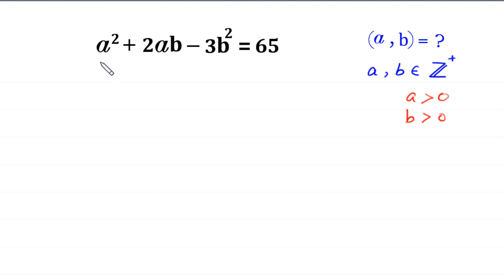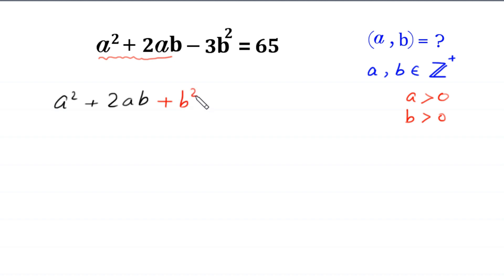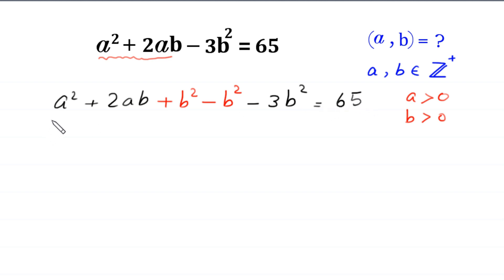First of all, in this expression a squared plus 2ab, we add and subtract b squared — like this: a squared plus 2ab plus b squared, minus b squared minus 3b squared is equal to 65. Now, this a squared plus 2ab plus b squared is a perfect square and can be written as (a plus b) whole squared.